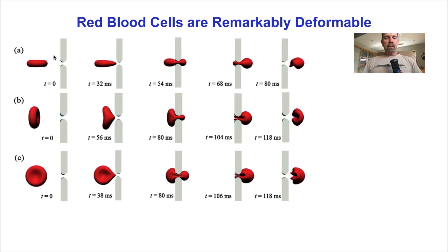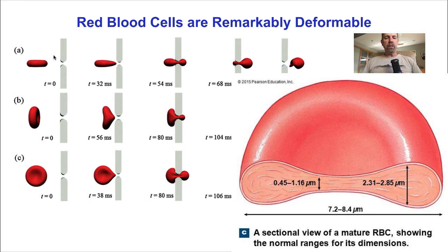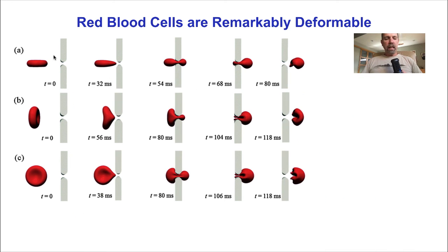Red blood cells are typically about 8 microns in diameter and 2 microns thick, but they routinely flow through capillaries that are under 5 microns in diameter. In fact, they are so highly deformable that they can squeeze through a slit less than 1 micron wide, similar to the dimensions of the endothelial slits in the spleen, as seen in this realistic computational simulation.